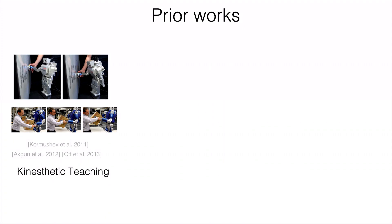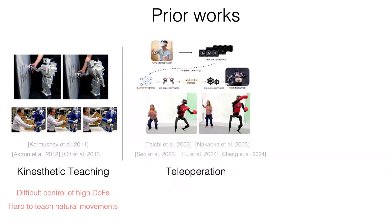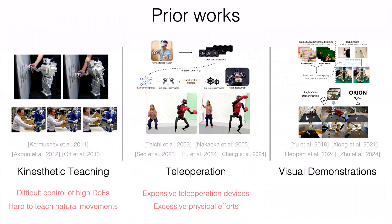But where does all this data come from? In prior work, researchers have mainly investigated two categories. The first is kinesthetic teaching. While intuitive for researchers, it's very hard to control high degrees of freedom and hard to teach natural movements when it involves more arms. There's another path: teleoperation. However, teleoperation devices cost more money, and even with reduced cost, it still requires excessive efforts to always operate the robots. Researchers have also looked into learning from visual demonstrations, where providing demonstrations is more intuitive and anyone can provide them through video recording. However, most results require paired robot data, which imposes a lot of effort on the demonstrator, and it's hard to scale to humanoid robots — results are only shown on tabletop manipulations.